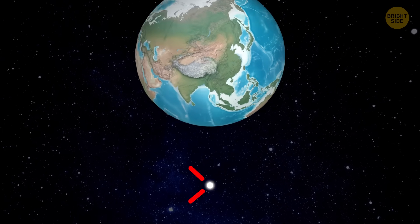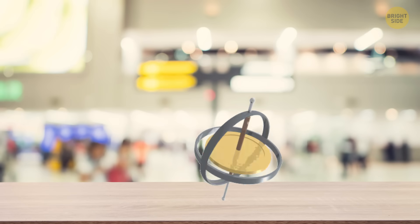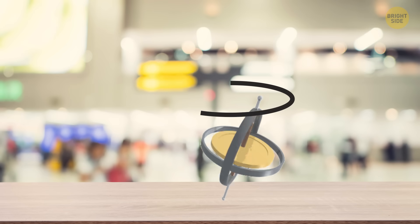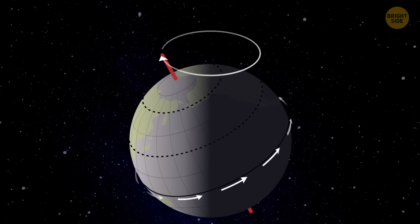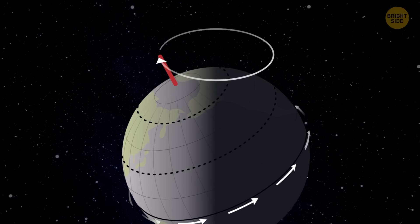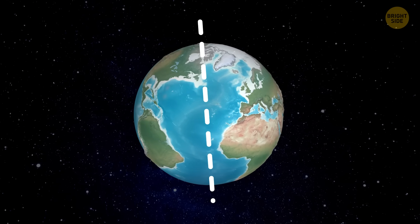Curiously, there's no South Star. There isn't a bright enough star right above the south pole, but one day we might get such a star. When you spin a top on the table, its end moves in a circle. We know this phenomenon as precession. Earth behaves in the same way, and the north and south poles won't always point towards the same spots in the sky.